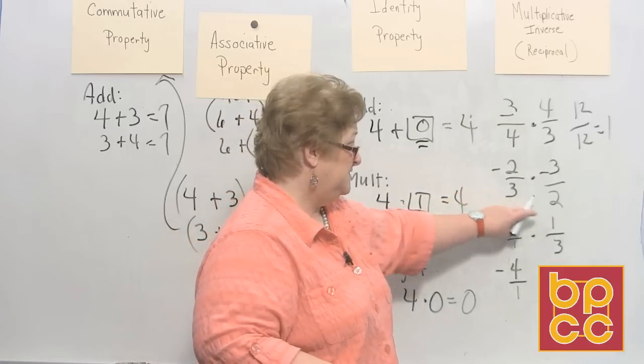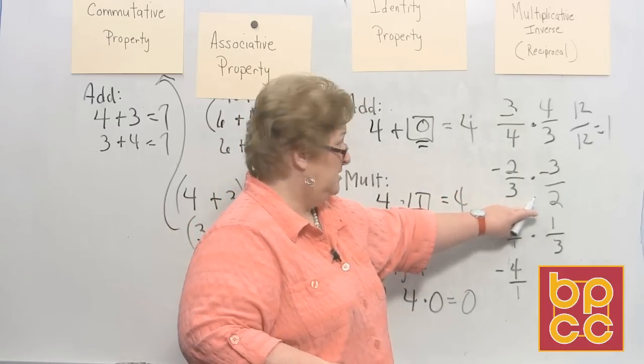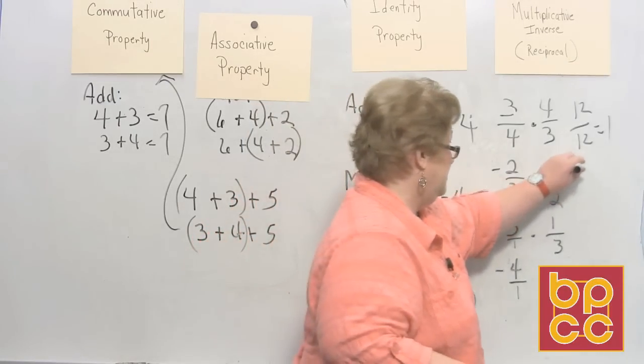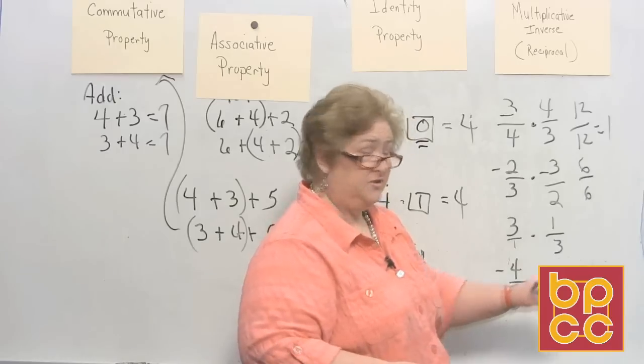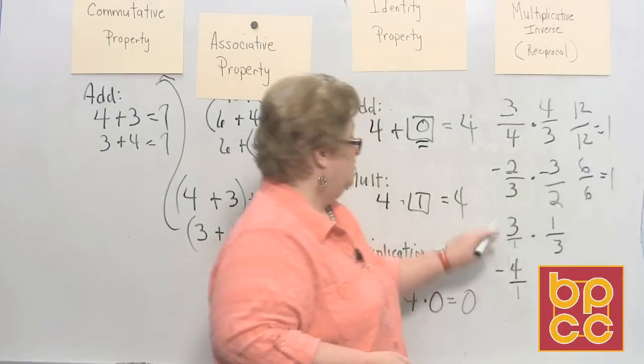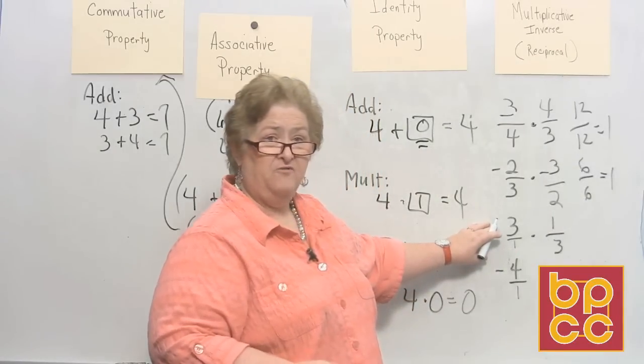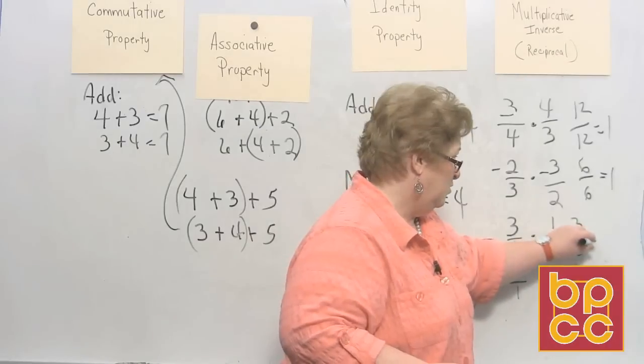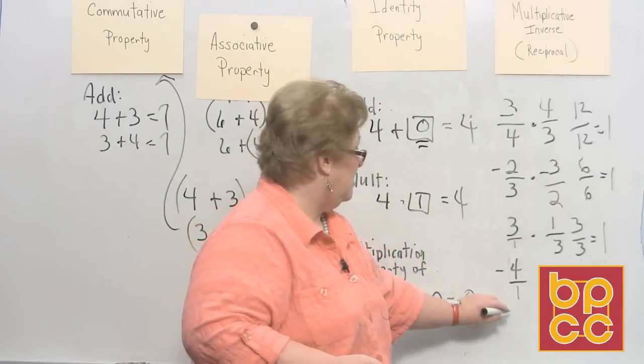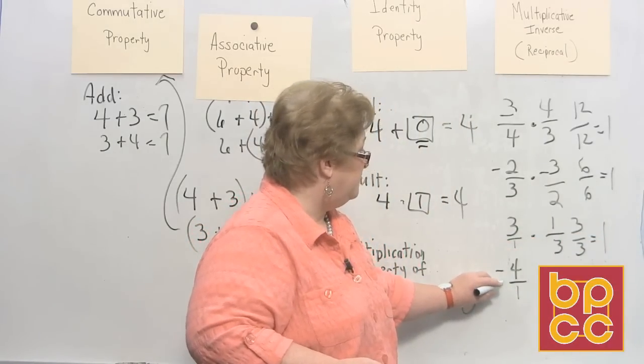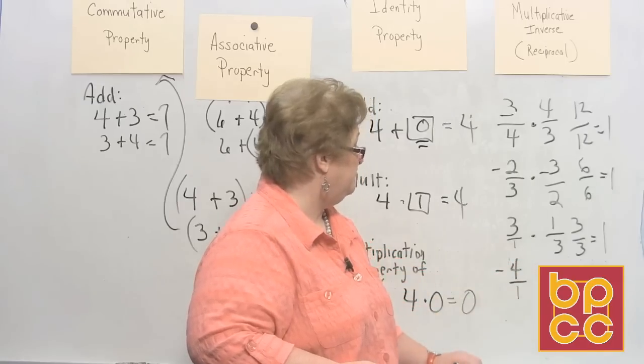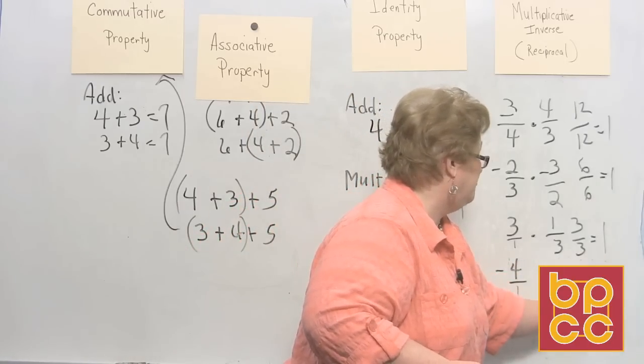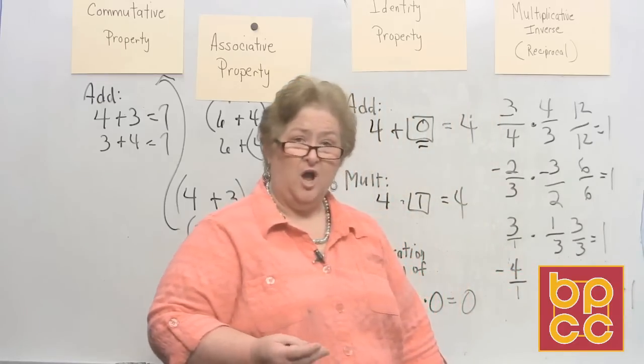A negative 2 thirds times a negative 3 over 2. Well, in multiplication, a negative times a negative is a positive. So we have 6 over 6. And 6 over 6 is equal to 1. On this one, we have 3 or 3 over 1 times 1 third. And that is 3 over 3, which is equal to 1. And then on the bottom, we have a negative 4 times a negative 1 fourth. Two negatives make a positive. That will be 4 over 4, which equals 1. And they're all positive.